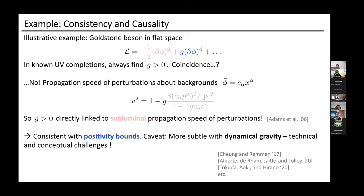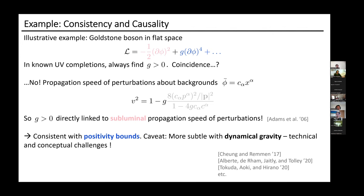All of this is very subtle when you have dynamical gravity. On the side of positivity bounds, there are technical challenges, and on the side of luminal propagation speeds, it's also subtle because light cones aren't well defined. I want to make this notion of using causality at low energies to identify consistent EFTs containing gravity more precise.